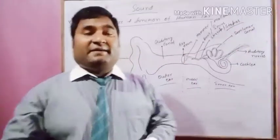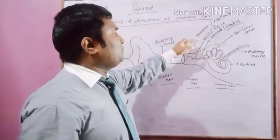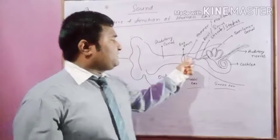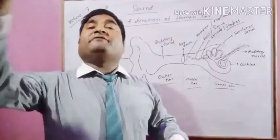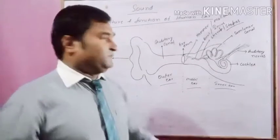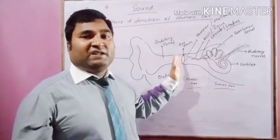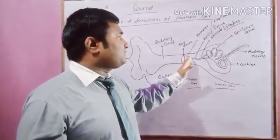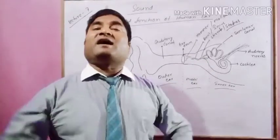So these are the names. Some books you will find malleus, incus, and stapes. In some books you will find hammer, anvil, and stirrup. These three small bones together amplify the vibration. The vibration which was felt by the eardrum is passed to three bones. These three bones, hammer, anvil, and stirrup together amplify this.